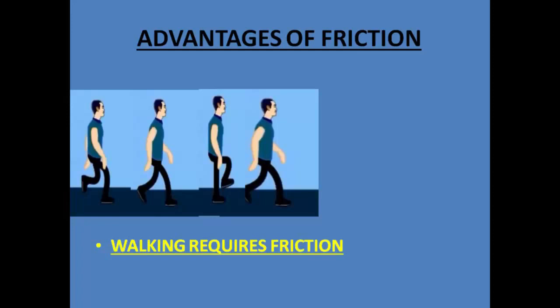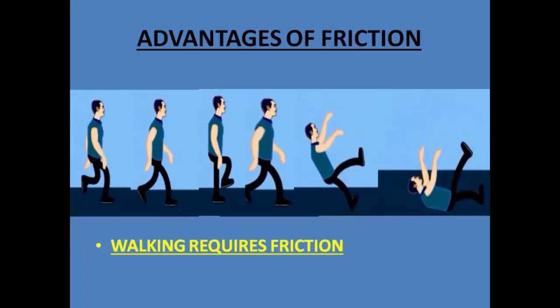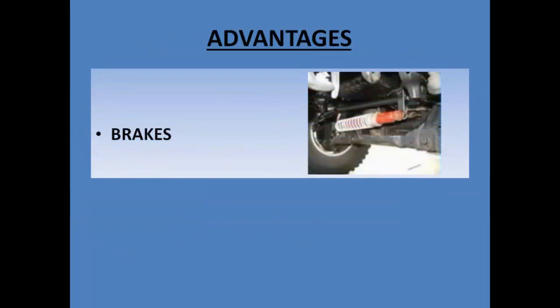Friction helps us to walk or move over any given surface. It would be difficult for us to walk if there is no friction between the ground and the floor. Friction also helps us to stop and control movement, for example, the brakes of a car or the brakes of a bike.